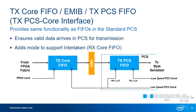The first blocks in the Enhanced PCS path are the PCS Core Interface blocks: the TX Core FIFO, the EMIB, and the TX PCS FIFO — providing the same functionality as in the Standard PCS. The TX Core FIFO adds an Interlaken FIFO mode to support the Interlaken protocol spec, which functions similarly to basic mode as an elastic buffer with full and empty flags and write enable control, but where the read side of this FIFO is controlled by the upcoming frame generator block.